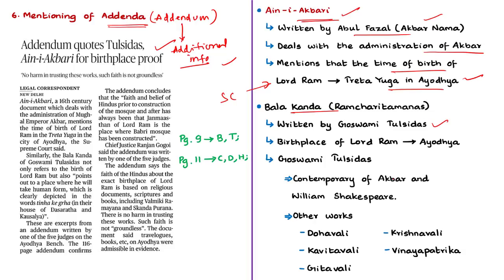Similarly, the Balakanda of Goswami Tulsidas was quoted by the Supreme Court bench. Balakanda is one of the chapters of Tulsidas's work called Ramcharitmanas, which also refers to the birth of Lord Rama at Ayodhya. Tulsidas was a contemporary of Akbar and also of William Shakespeare. Other noted works of Tulsidas include Dohavali, Kavitavali, Geetavali, Krishnavali, and Vinayapatrika.